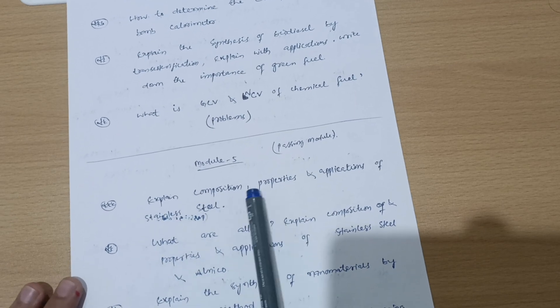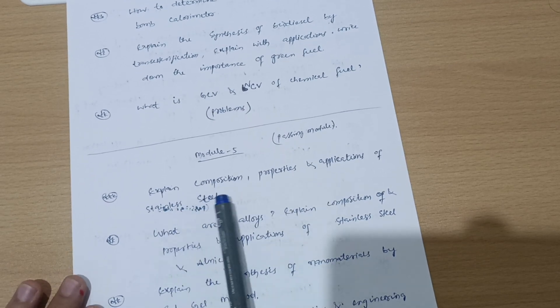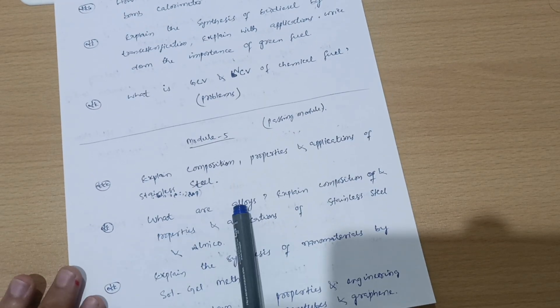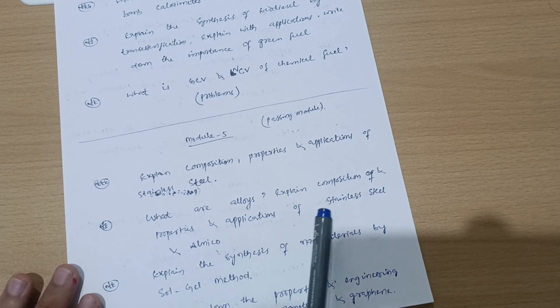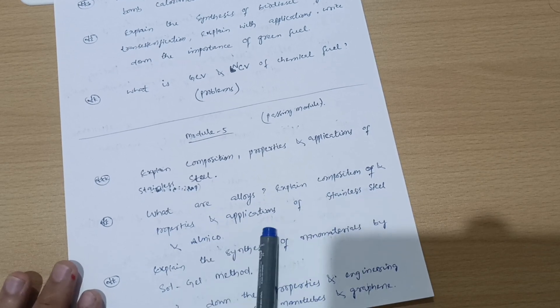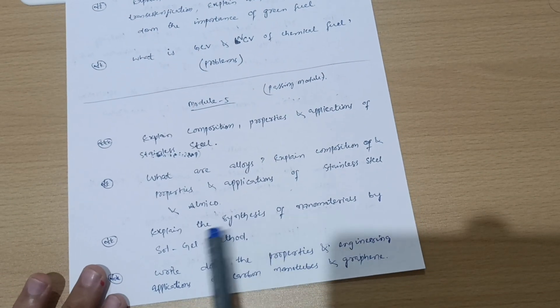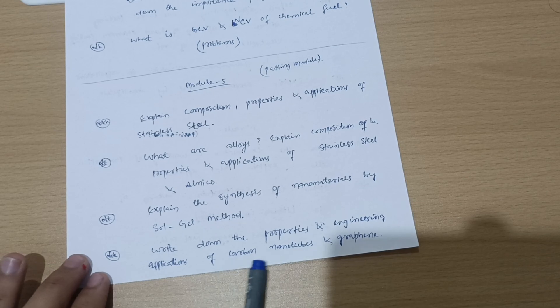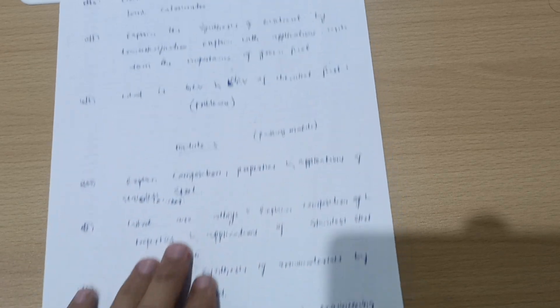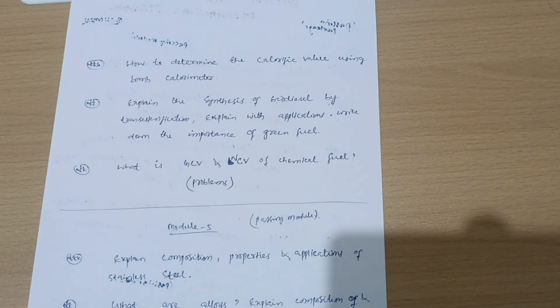Next is Module 5, which is also a passing module in which you have to cover: explain composition, properties, and applications of stainless steel. What are alloys? Explain composition and properties and applications of stainless steel and alnico. Next is explain the synthesis of nanomaterials by sol-gel method.